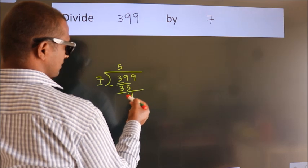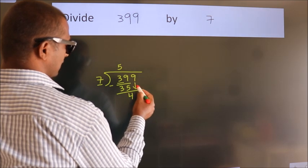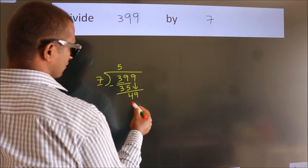After this, bring down the beside number. So 9 down. So 49.